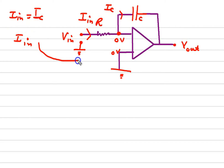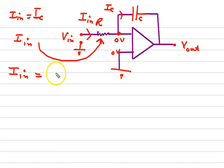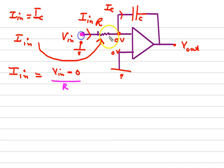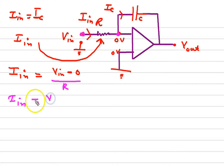Now, what is I_in? From the resistor, by using Ohm's law, the current I_in equals the difference of voltage — V_in minus zero, V_in at one point and zero at the other point of the resistor — divided by the resistor R. So I_in equals V_in divided by R.